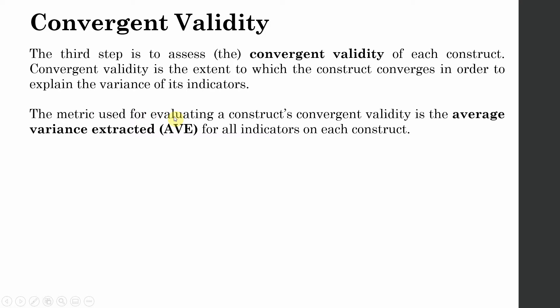The metric or the measure that we use to establish convergent validity is called average variance extracted for all indicators on each construct.